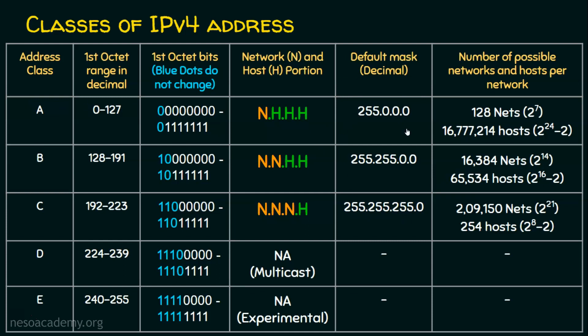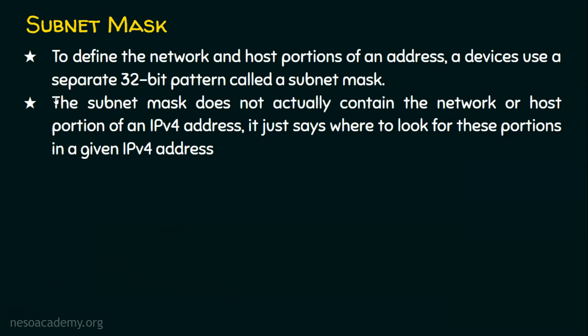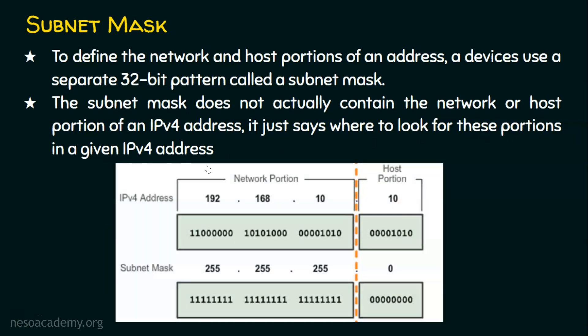Let's revisit the role of subnet mask formally. To define the network and host portions of an IP address, a device uses a separate 32-bit pattern which we call the subnet mask. This subnet mask by itself does not contain any information about the network or the host. But once it is accompanied with the IP address, it can identify which is the host portion and which is the network portion. The subnet mask does not actually contain the network or host portion — it just says where to look for these portions in the given IP address.